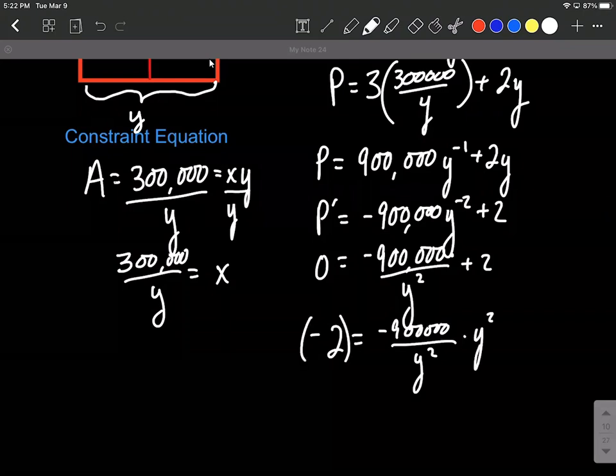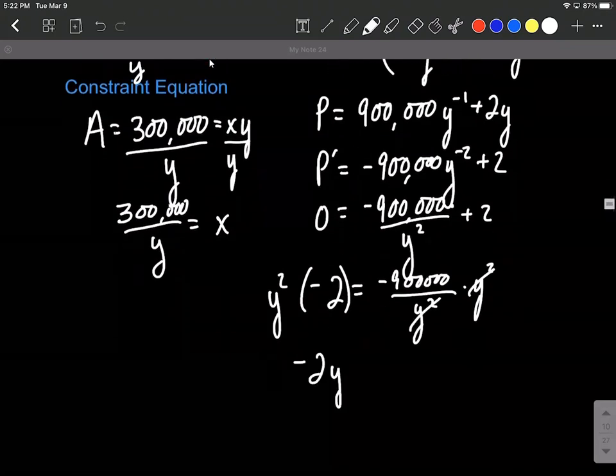So really, this would be negative 2y squared equals negative 900,000.